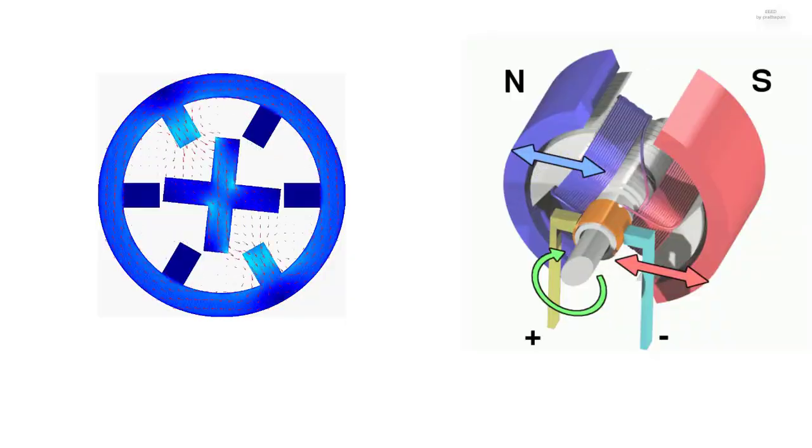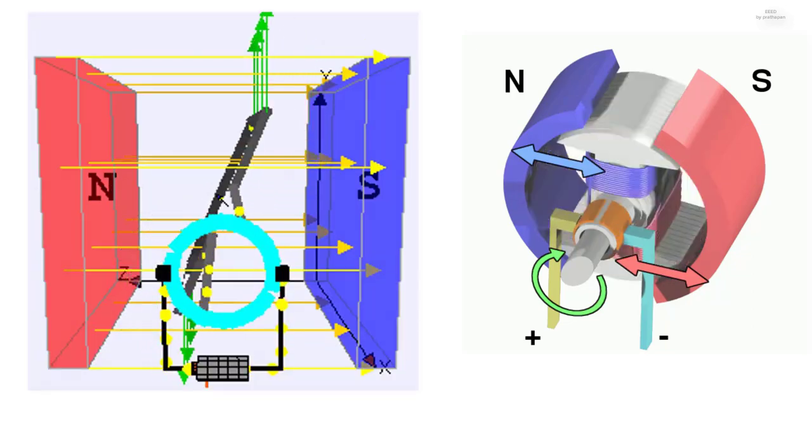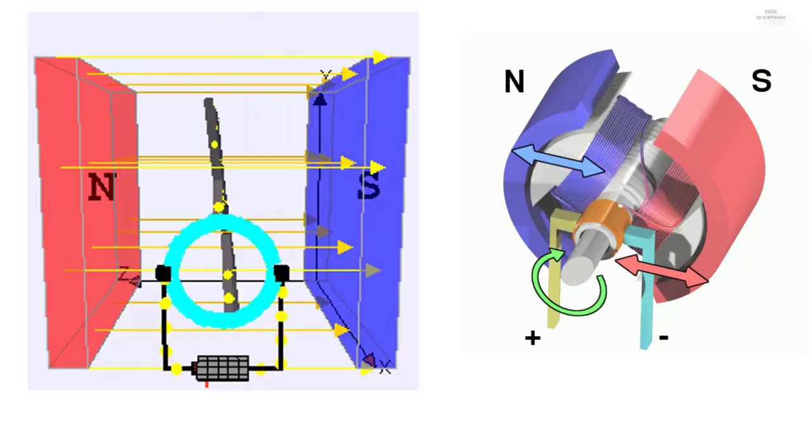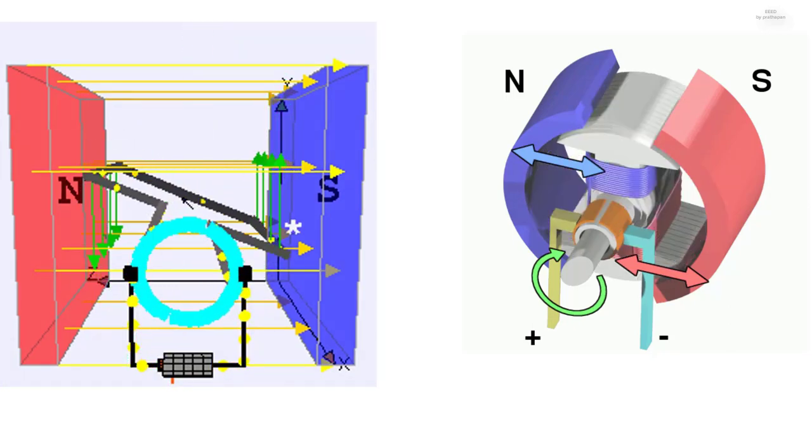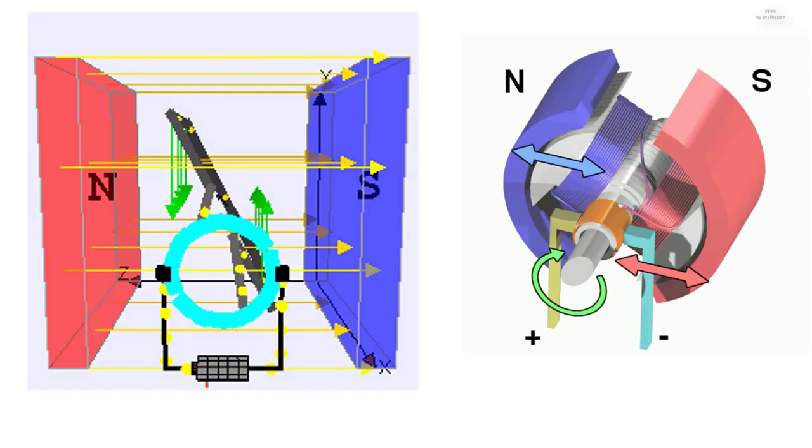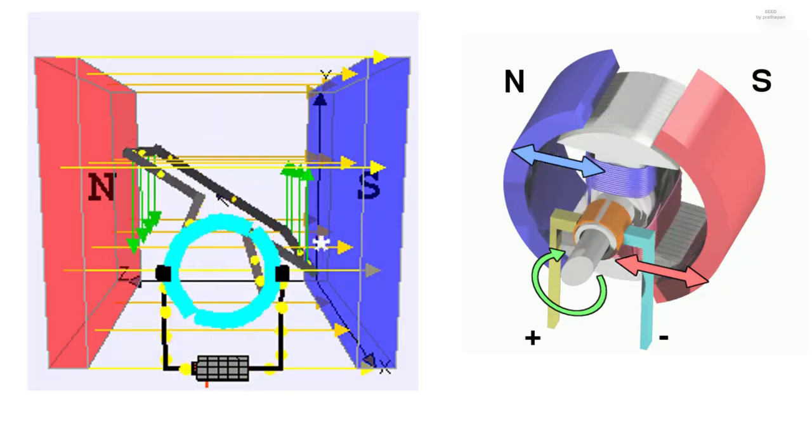When current flows through a conducting wire and an external magnetic field is applied across that flow, the conducting wire experiences a force perpendicular both to that field and to the direction of the current flow. They are mutually perpendicular.